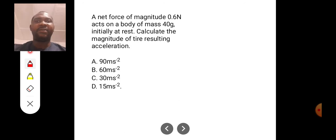Let's see questions. Here it says, a net force of magnitude 0.6 N acts on a body of mass 40 grams initially at rest. Calculate the magnitude of the resulting acceleration.